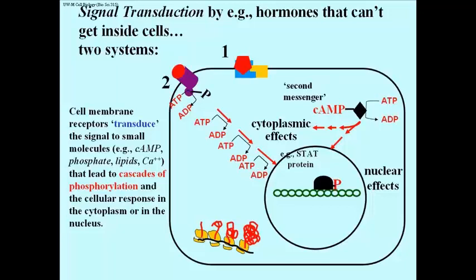They all facilitate a phosphorylation cascade that leads ultimately to a final phosphorylation and a final cellular response in the cytoplasm or in the nucleus. We're focusing on gene regulation, so we're really looking at signal transduction events that lead to gene regulation.